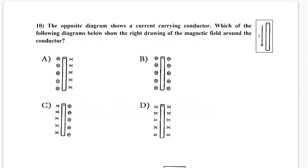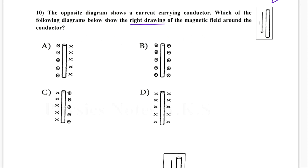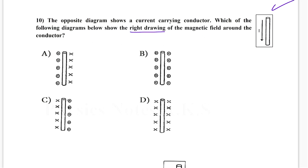Now they say the opposite diagram shows a current carrying conductor. Here, this one, it is a straight wire. Which of the following below shows the right drawing of the magnetic field around the conductor? Let me remind you of something before I start solving this.